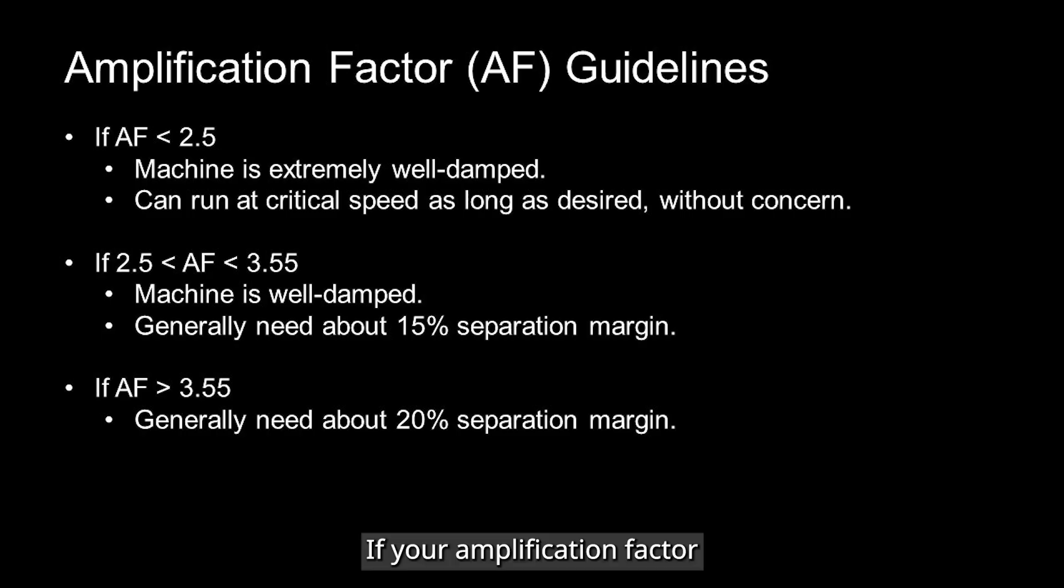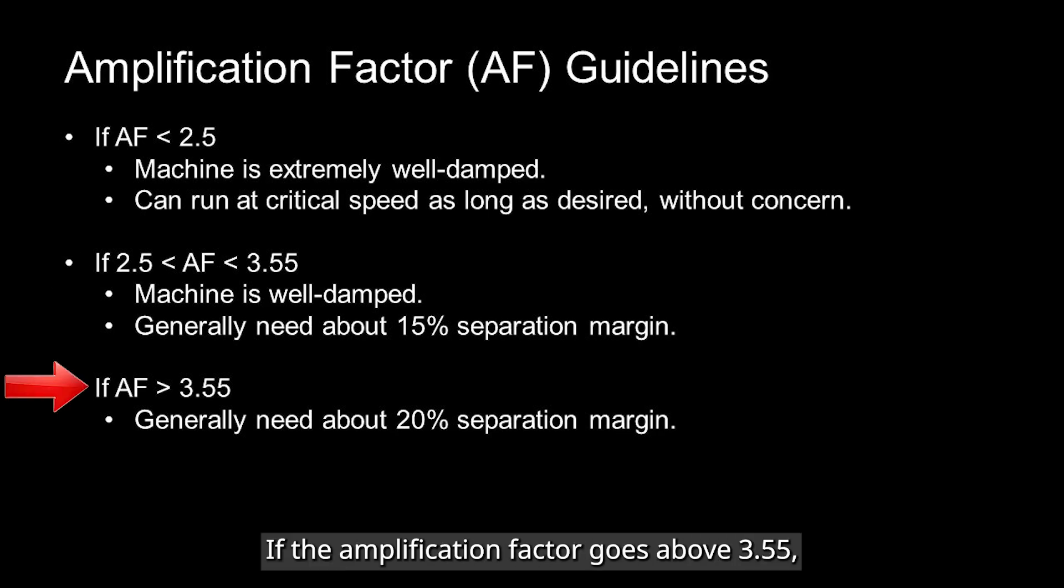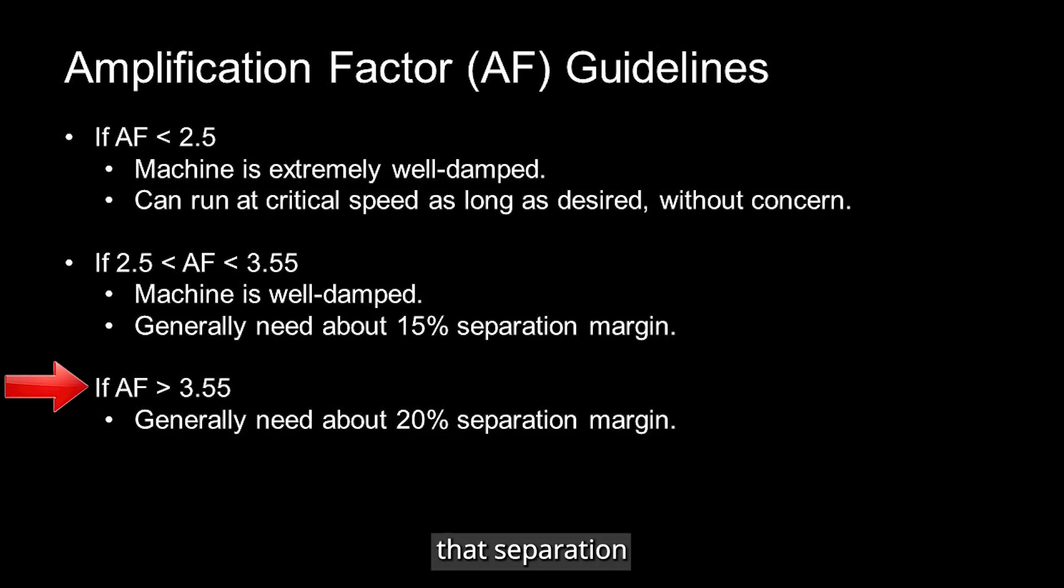If your amplification factor is below 2.5, the system is considered well-damped, and a separation margin isn't required. Once the amplification factor exceeds 2.5, a separation margin of about 15% is recommended, meaning your operating speed should stay safely away from the critical speed. If the amplification factor goes above 3.55, that separation margin increases to around 20%.